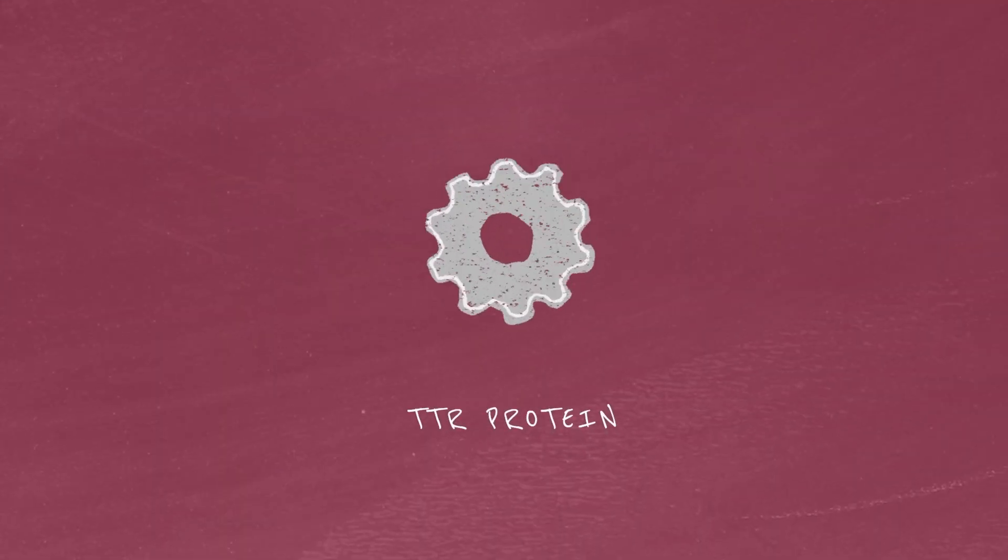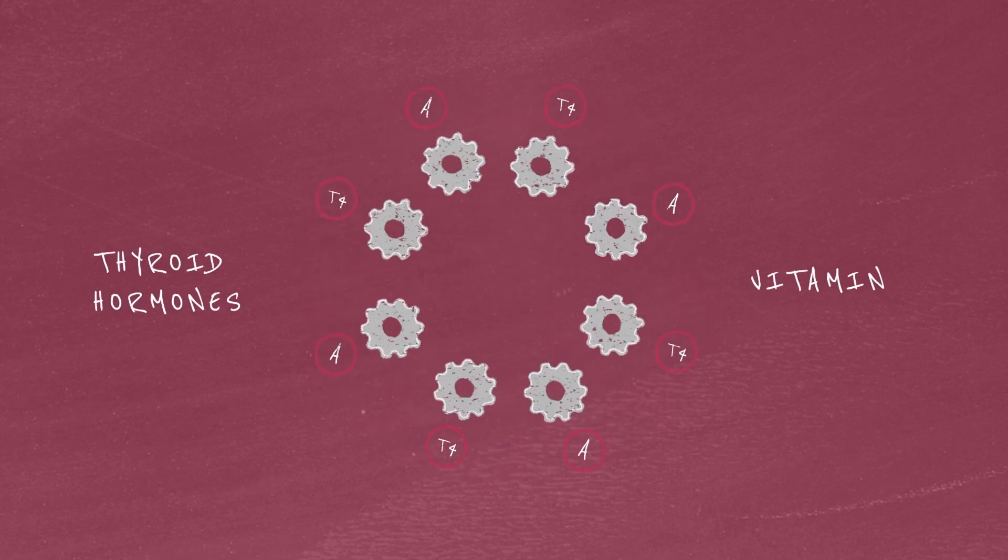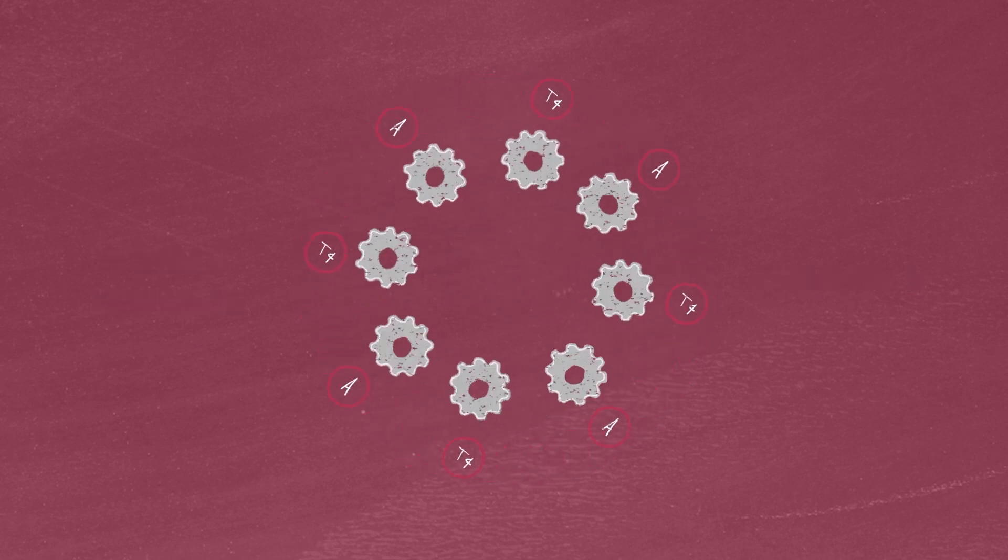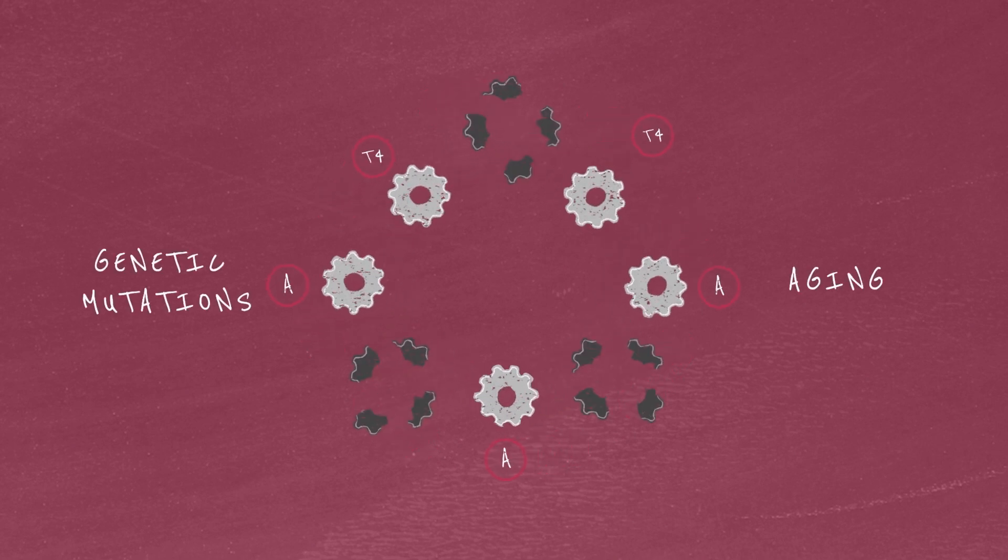Imagine our TTR protein as a tiny, diligent worker, carrying thyroid hormones and vitamin A in the blood. But sometimes genetic mutations or aging can unsettle these workers, causing them to fall apart and misfold,